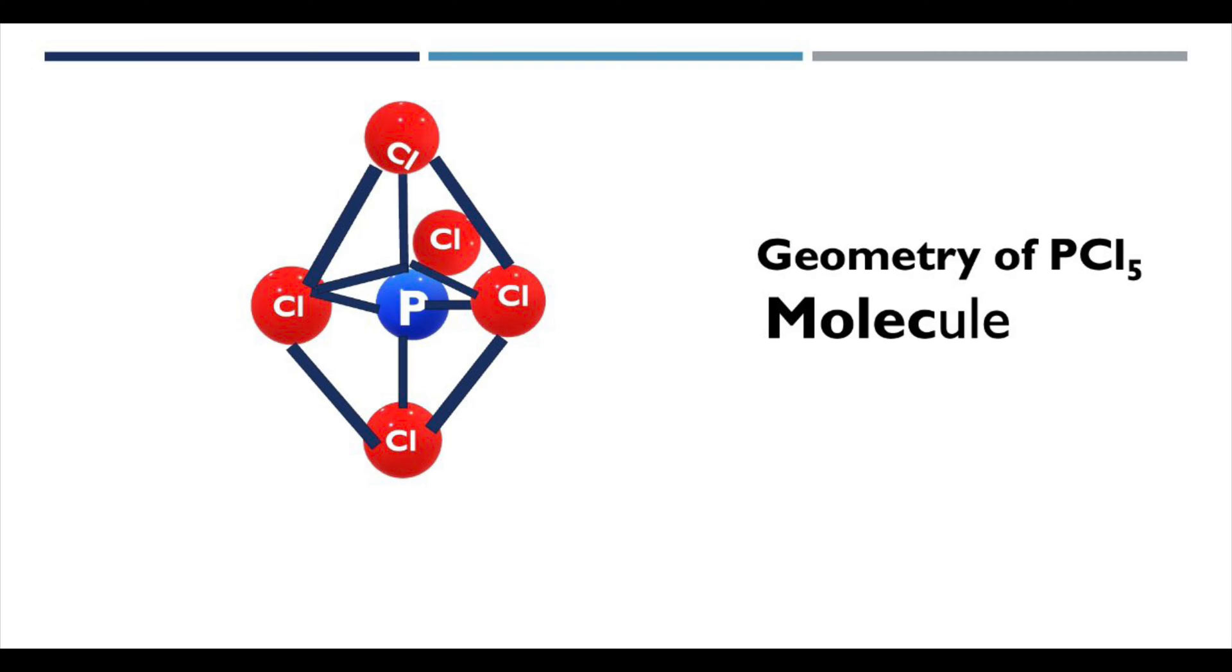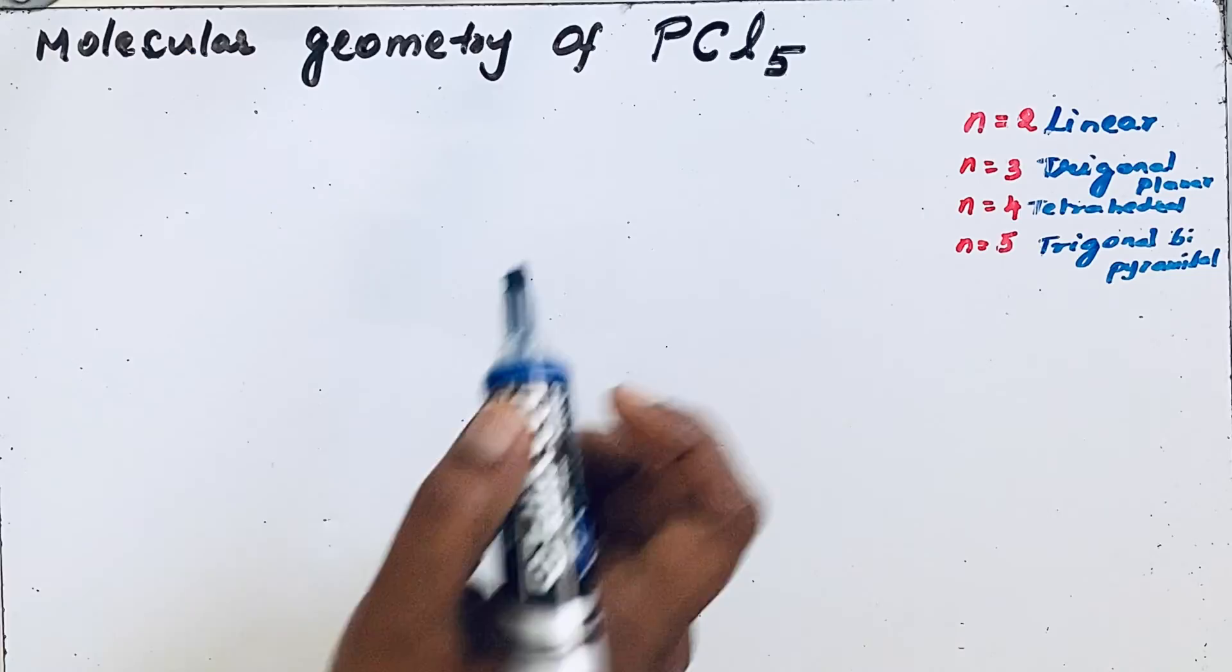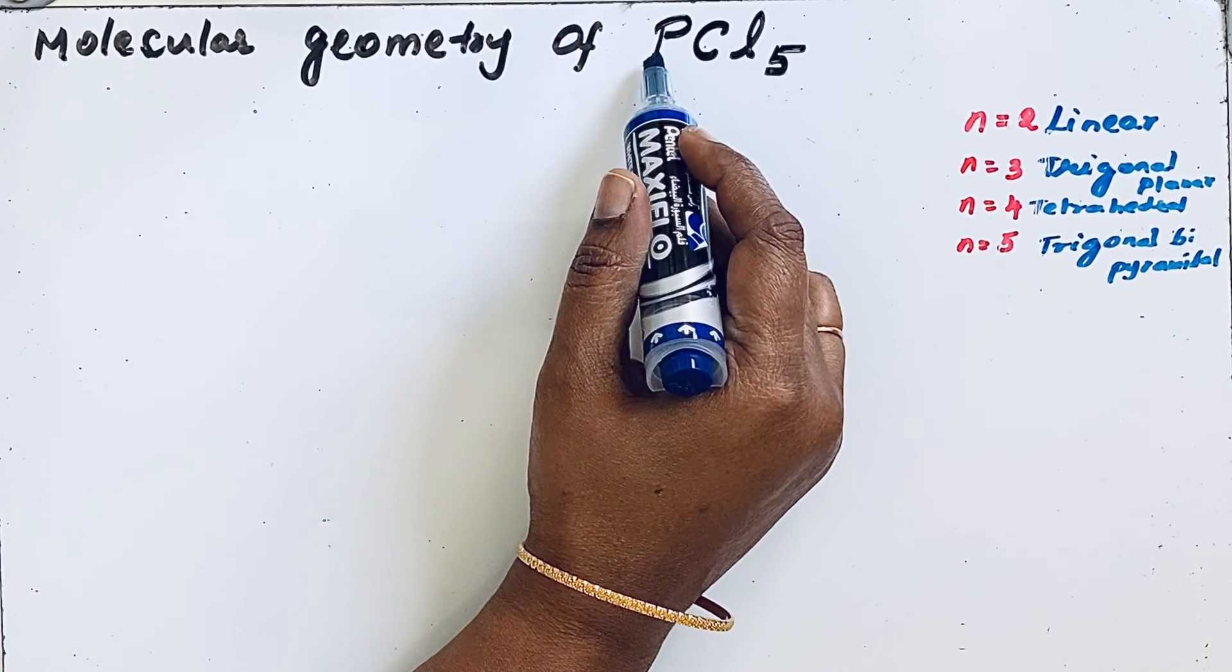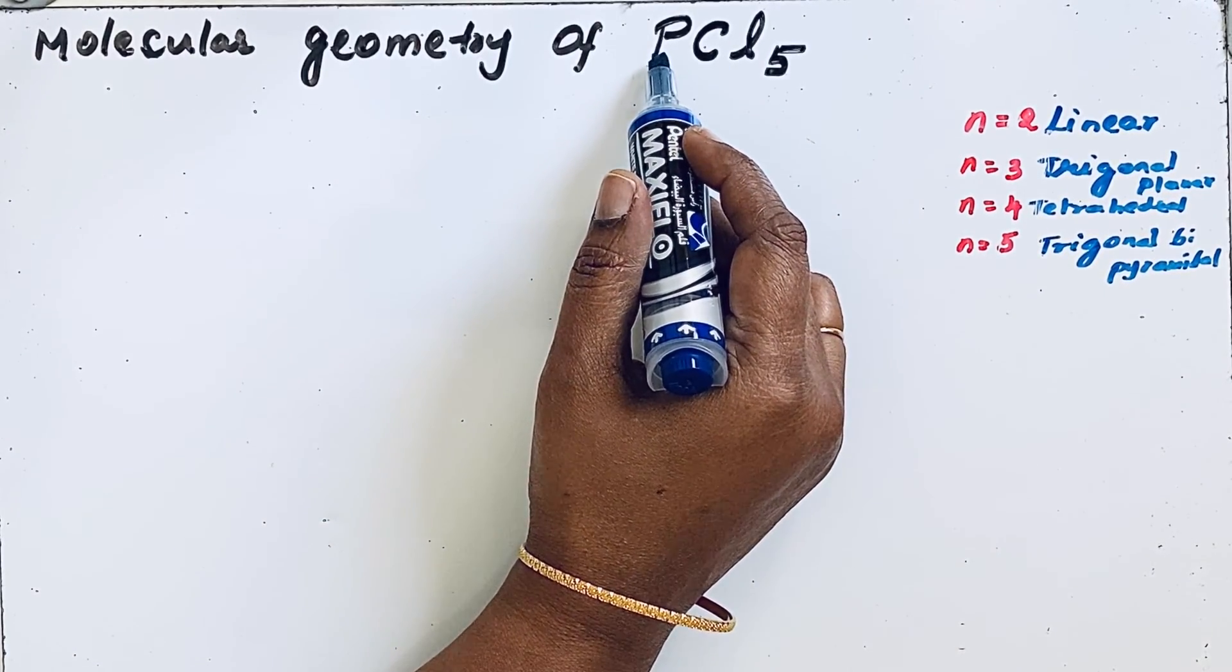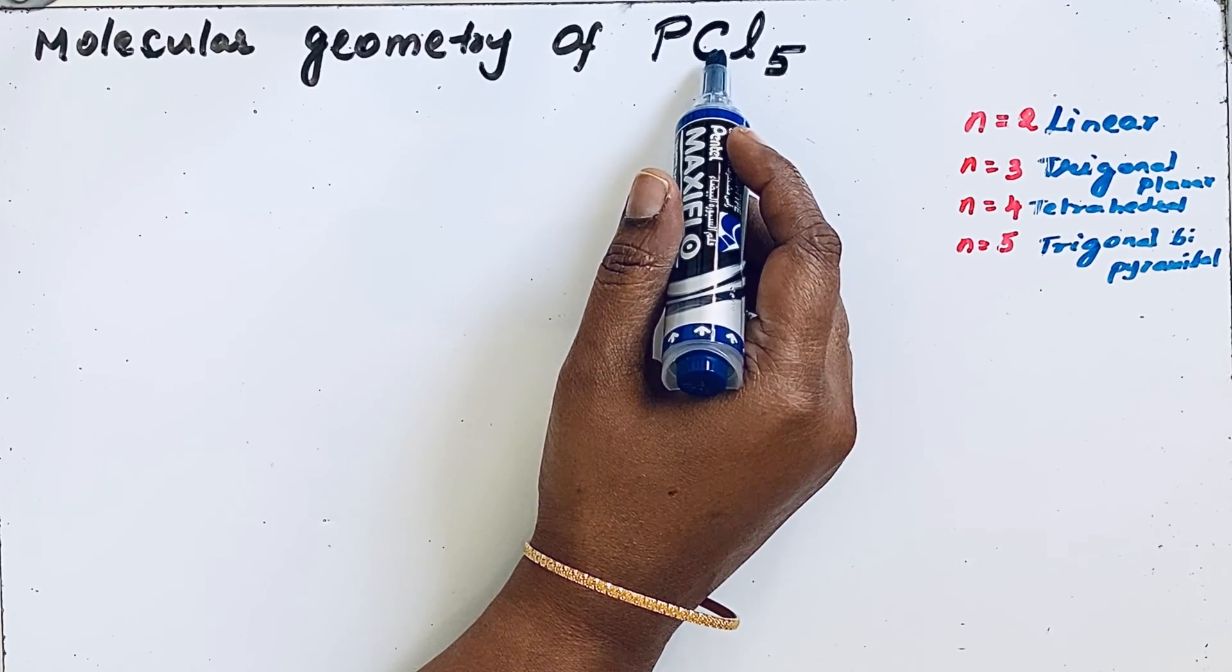To clearly understand the molecular geometry of PCl5, first we should identify the central atom. In PCl5 molecule, phosphorus is less electronegative compared to the highly electronegative chlorine atom, so phosphorus will take the central atom position. Phosphorus has atomic number 15.